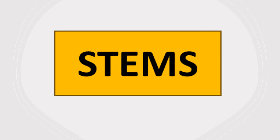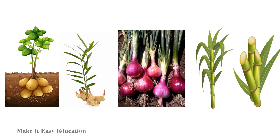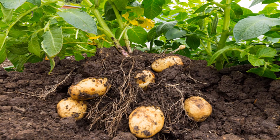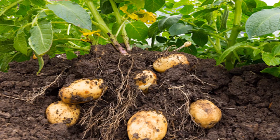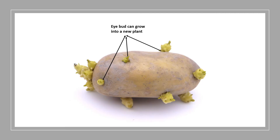Stems. We eat the stems of potato, ginger, onion, and sugar cane. The stems of these plants can grow into new plants. A potato is a special stem that grows under the ground. We may find special structures called eyes on its surface. Any piece of potato with an eye bud can grow into a new plant.